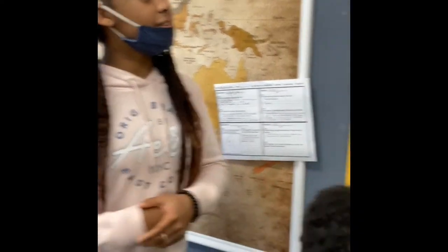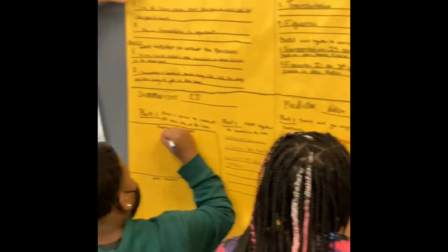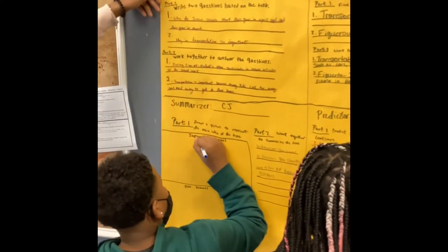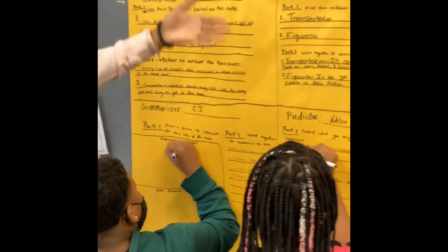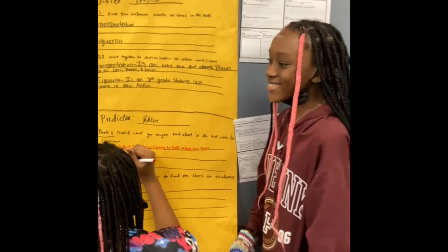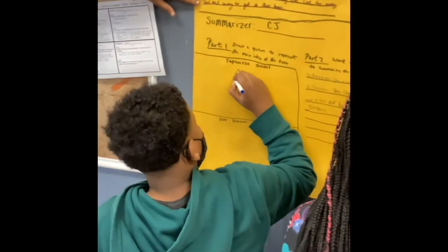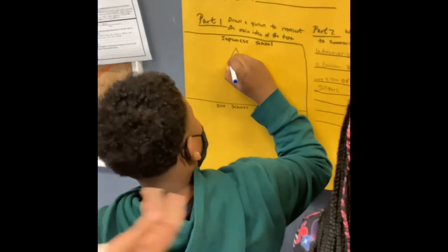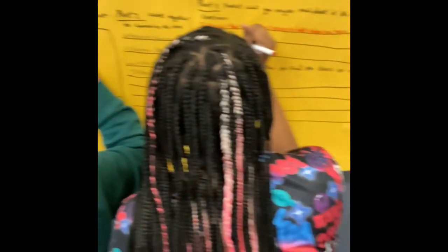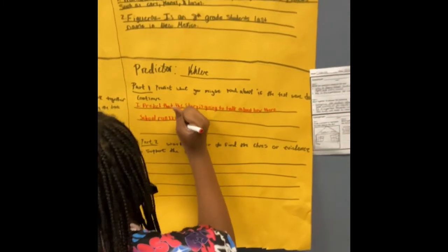So right here, this is our Reciprocal Teaching. You have me as the Questioner, you have Kirsten as the Clarifier, CJ as the Summarizer, and Chloe as the Predictor. Now, Kirsten is going to talk to you a little bit about what they're doing.